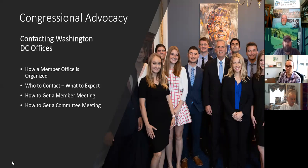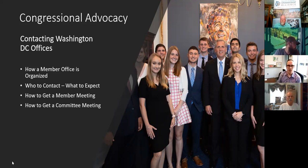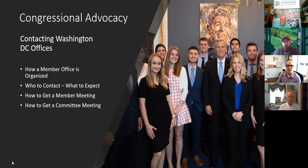The organizational structure for a personal office on the Hill varies based on the emphasis of the member. Generally, at the top is the chief of staff — usually the most senior staffer who manages the policy, communications, and admin functions while also advising the member on political matters.